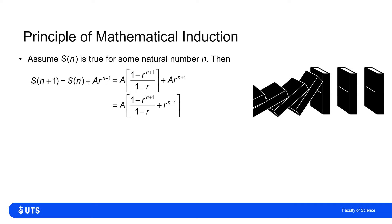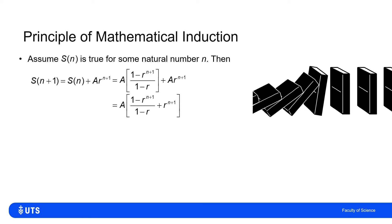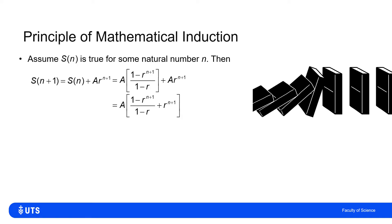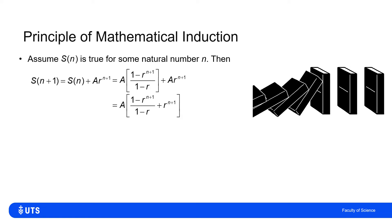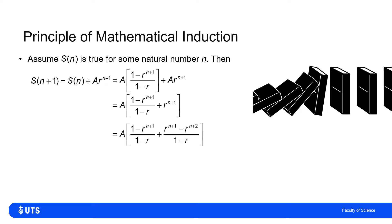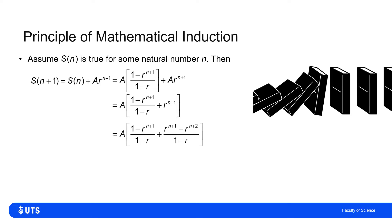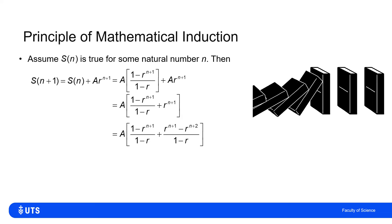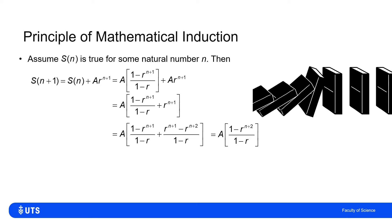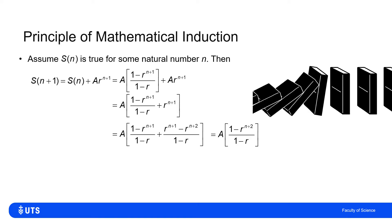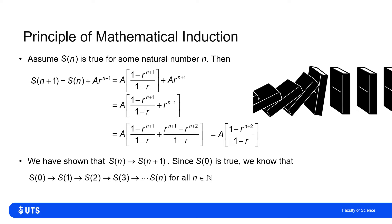We've got two things to add within the bracket, so let's put them both over the common denominator (1 - r). We multiply the back term r^(n+1) by (1 - r)/(1 - r), replacing it with (r^(n+1) - r^(n+2))/(1 - r). Now we can see that the -r^(n+1) and +r^(n+1) terms cancel, simplifying to a × (1 - r^(n+2))/(1 - r), which is exactly the claimed statement for S(n+1).